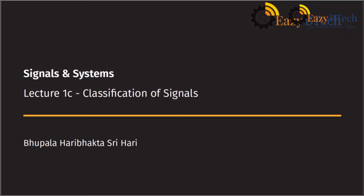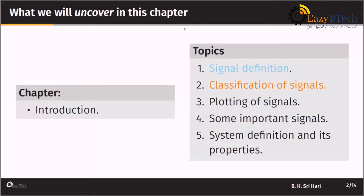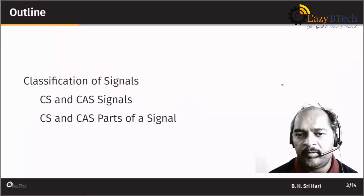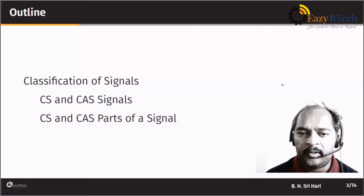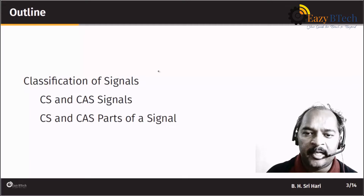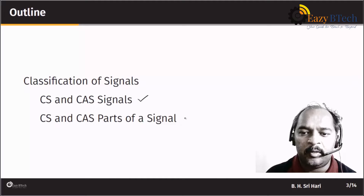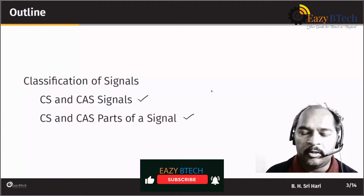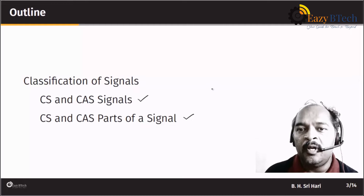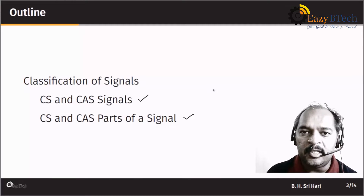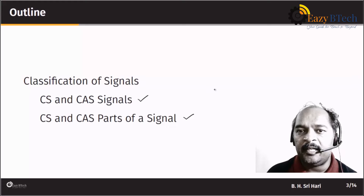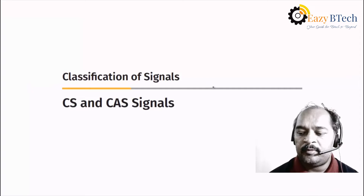Hello students, welcome back to Easy BTEC channel. You are listening to the course of Signals and Systems. We are in the first chapter, continuing the topic of classification of signals. In this video, we will talk about conjugate symmetric and conjugate anti-symmetric signals, and also the conjugate symmetric and conjugate anti-symmetric parts of a signal. They look similar to even and odd signals, but here the signal can be complex.